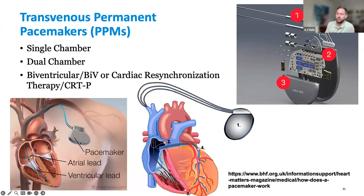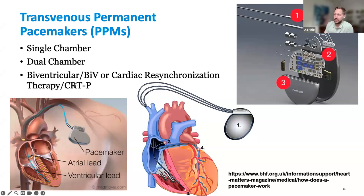There are new types and placements we'll discuss down the road, like left bundle and His bundle, which has kind of fallen out of popularity but is still in circulation. We also have biventricular or BIV pacemakers — cardiac resynchronization therapy, CRTP devices. If you hear someone say biventricular, CRTD, or CRTP, they mean the same thing. There will be three leads: one in the atrium, one in the ventricle, and one going through the coronary sinus to pace semi-epicardially. You can also pace externally through epicardial leads.